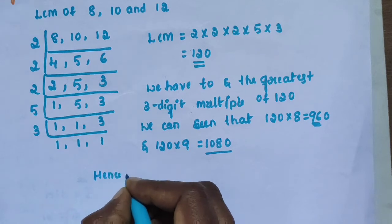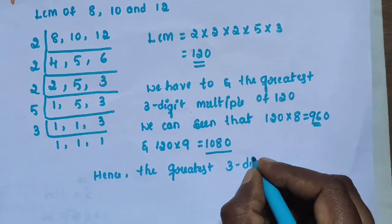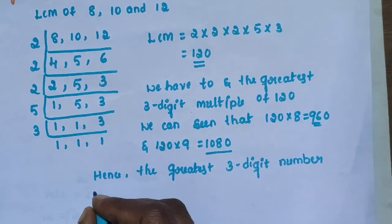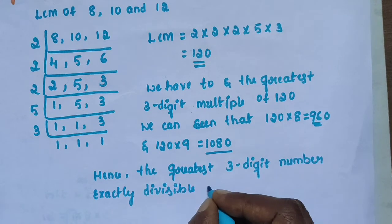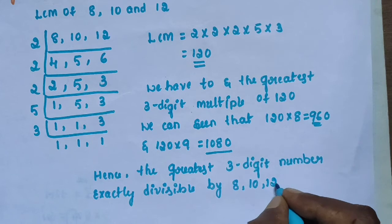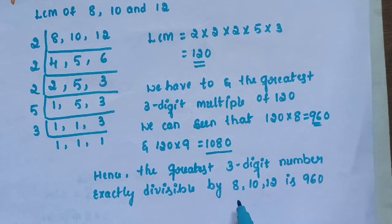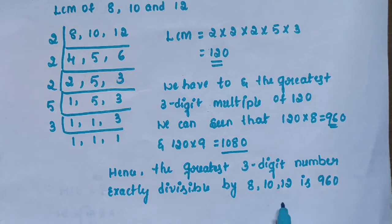Hence the greatest 3-digit number exactly divisible by 8, 10 and 12 is 960. We can verify: 960 ÷ 8 = 120, 960 ÷ 10 = 96, 960 ÷ 12 = 80. So 960 is exactly divisible by 8, 10 and 12.